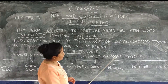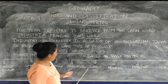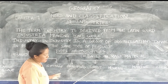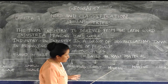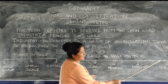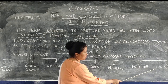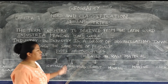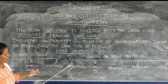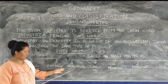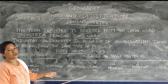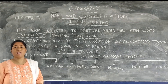On the basis of raw material, we have agro-based industry, forest-based industry, mineral-based industry, marine-based industry, and chemical-based industry. Under agro-based industry, there are two types: one is farm-based and the other is animal-based.